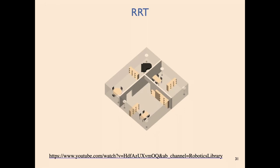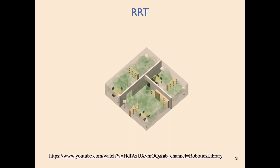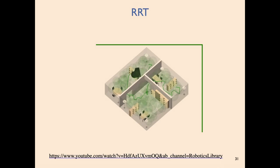Here's a video illustrating this — the piano movers problem. Someone implemented RRT for literally moving a piano in an apartment. Actual configurations of the piano are being sampled and we're checking whether things are in collision. This shows the steps in the RRT algorithm, and the path found at the end gives configurations that the piano must take to get from some initial configuration to a final configuration without colliding with obstacles.